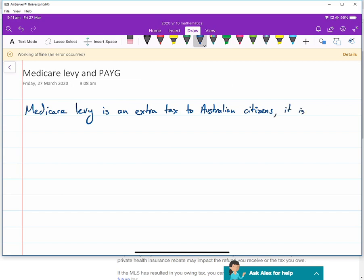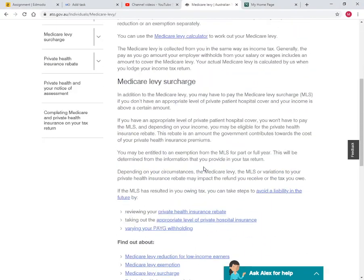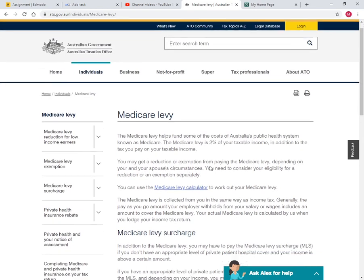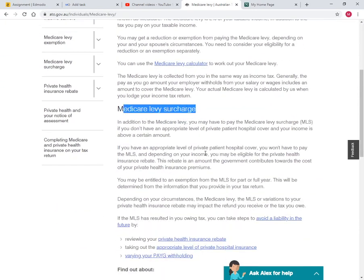So Medicare Levy is an extra tax to Australian citizens. It is charged at 2% of your taxable income. If you are a low income earner, you do not pay 2% of your taxable income. There is actually a threshold. However, there's also a surcharge for the high income earners.